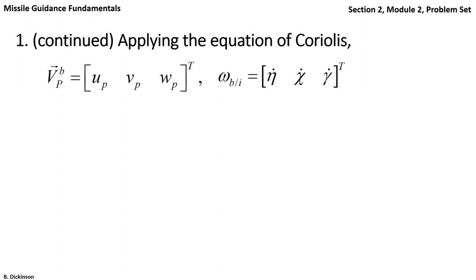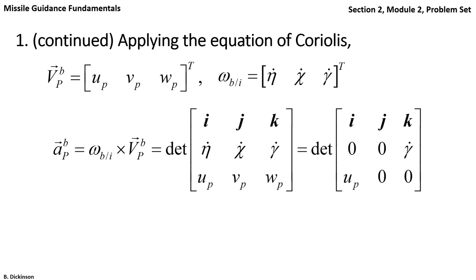Let's expand the velocity vector in terms of its components u, v, and w, as well as the angular velocity vector in terms of its components eta dot, chi dot, and gamma dot. And to evaluate the cross product, we're just going to use the determinant formula.